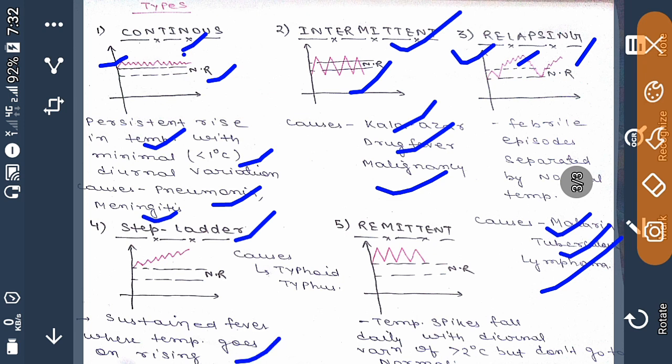Now coming to remittent fever: in this, temperature spikes fall daily with diurnal variation of more than two degrees Centigrade, but doesn't come to normal anytime. You are seeing the graph—it does not touch the normal baseline; it will always be above the baseline.